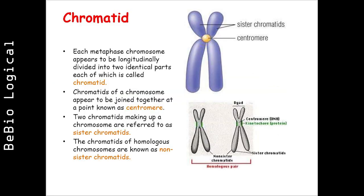Each metaphase chromosome appears to be longitudinally divided into two identical parts, each of which is called a chromatid. Chromatids of a chromosome appear to be joined together at a point known as centromere. Two chromatids making up a chromosome are referred to as sister chromatids, while the chromatids of homologous chromosomes are known as non-sister chromatids.